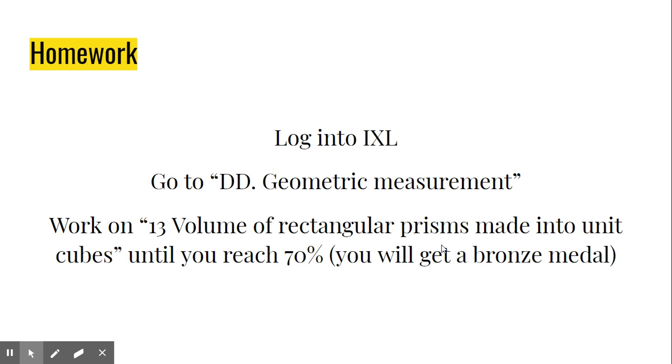It'll be number 13 called Volume of Rectangular Prisms Made into Unit Cubes Until You Reach 70%, which will be your bronze medal. So once you do that, you should be all set. And I'll be able to check it from my end. If you have any questions, you're welcome to come to my office hours. And we'll go over it then. All right. Good luck.